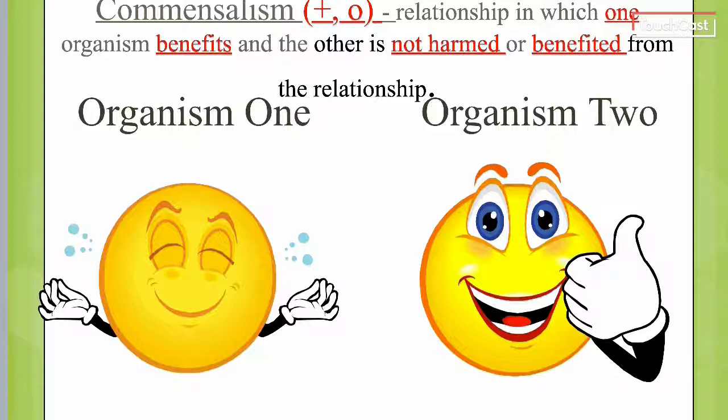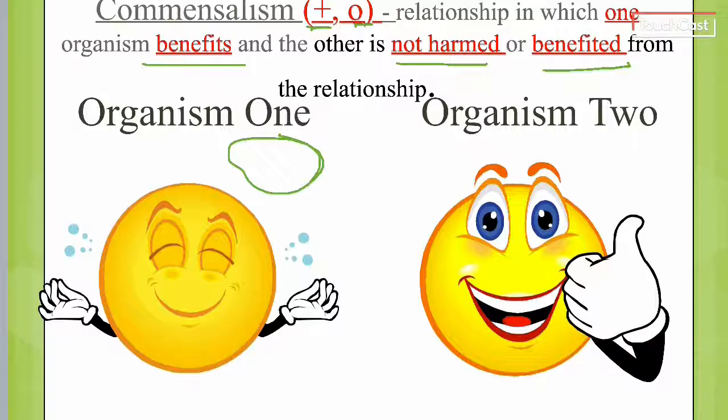Commensalism — on the front cover it's a positive for one and neutral, or zero, for the other. On the inside, it's a relationship in which one organism benefits and the other is not harmed or benefited from the relationship. One is neutral — neither harmed nor benefited — and the other one is doing great.